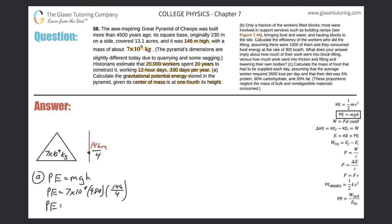So we get about 2.5. Now, they gave me the mass with one sig fig, so I should really have one, but rounding it that much might cause issues for later answers. So I'm just going to leave it in this form — 2.5 times 10 to the 12 joules. That's the potential energy stored in the pyramid.